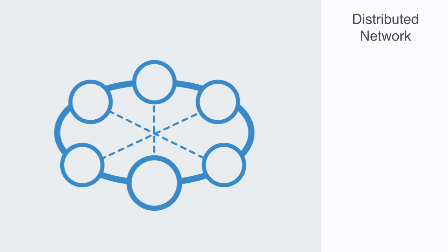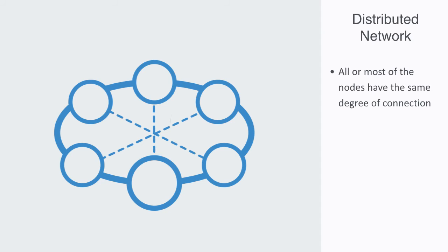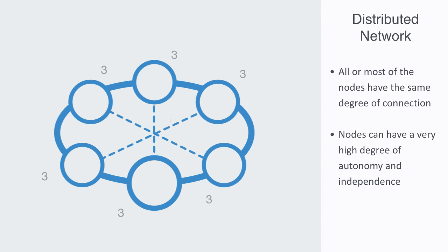The first type of network model we'll discuss is called a distributed network. This type of model is in many ways quite similar to our random network. It is defined by a low level of degree distribution, meaning all or most of the nodes have the same degree of connectivity. As there are no dominant nodes to provide global functions for the entire network, each node must contribute equally to the network's maintenance. And as there is no real global coordination in a distributed network, nodes have a much higher degree of autonomy, as they are largely self-sufficient and independent from nodes outside of their neighborhood.